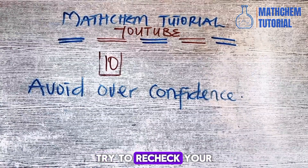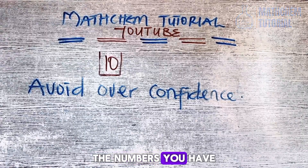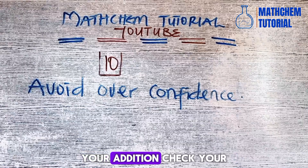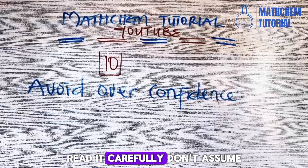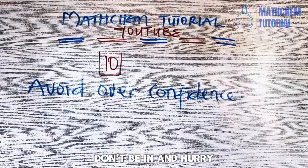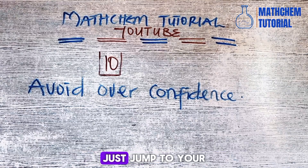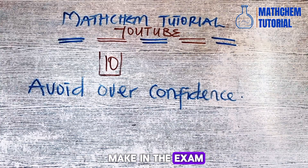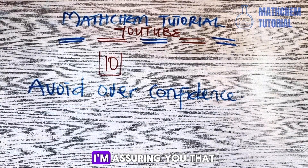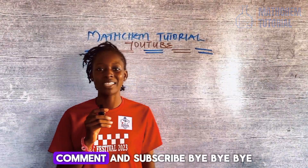Number ten is overconfidence. Don't be too confident — recheck your work very well when you are done. Go through it again, check your values, numbers, multiplication, and addition. Recheck your observations, don't just assume, and read questions carefully. Don't be in a hurry and don't jump directly to your answer without reading the question completely. If you can avoid all these 10 errors, your next score in your exam is going to be higher than before. Thank you for watching — like, share, comment, and subscribe.